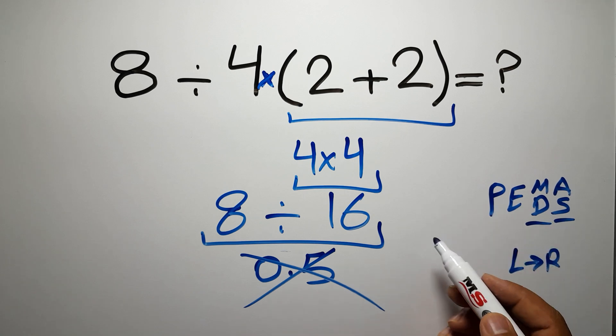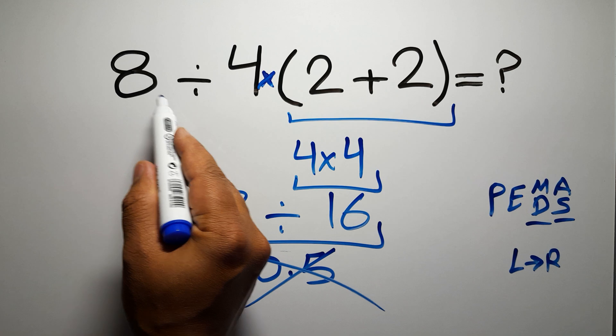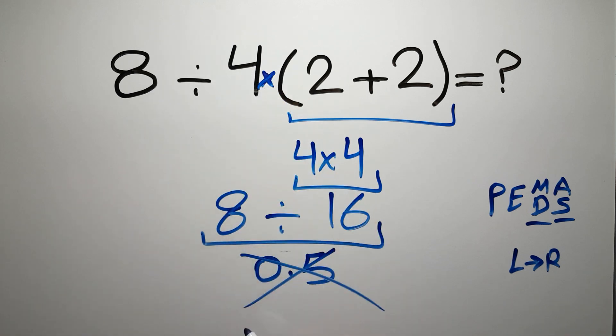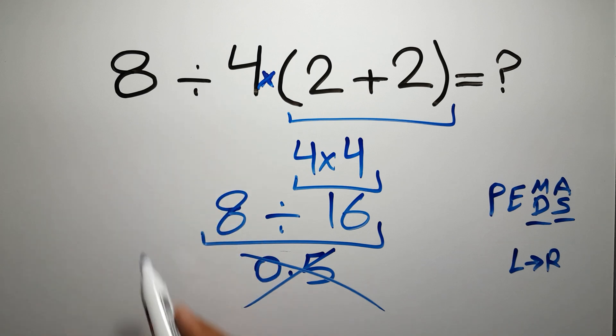So according to the PEMDAS, first we have to do these parentheses, then this division, and finally this multiplication. If you do this multiplication before this division, it is wrong.